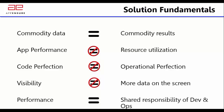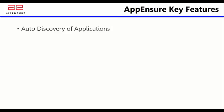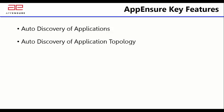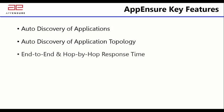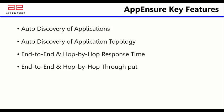With these fundamentals as the driving force, we built Appinsure's solution. Key features include auto-discovery of applications and application topology without the user needing to configure anything. We measure end-to-end and hop-by-hop response time and throughput for every application for every user continuously. We are not dependent on synthetic transactions — we monitor real transactions from the end user, projecting the real behavior of the application and real usage by end users.